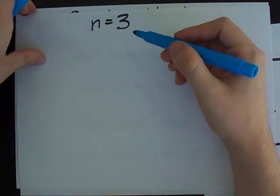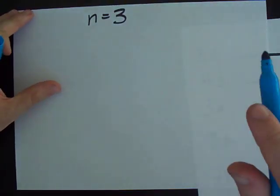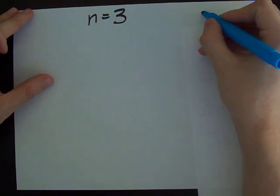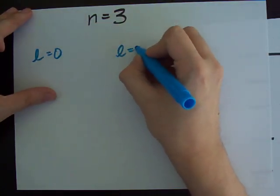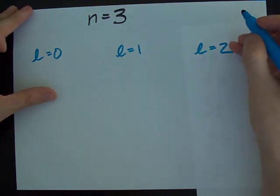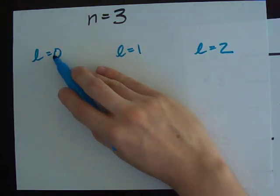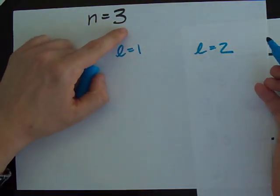When I have an electron in the third energy level, n is three. That means that L must be either zero, or one, or two. Because L can only go up from zero up to n minus one. In this case, three minus one, which is two.